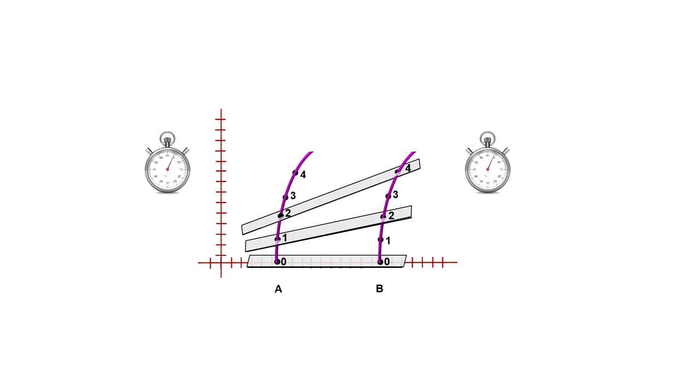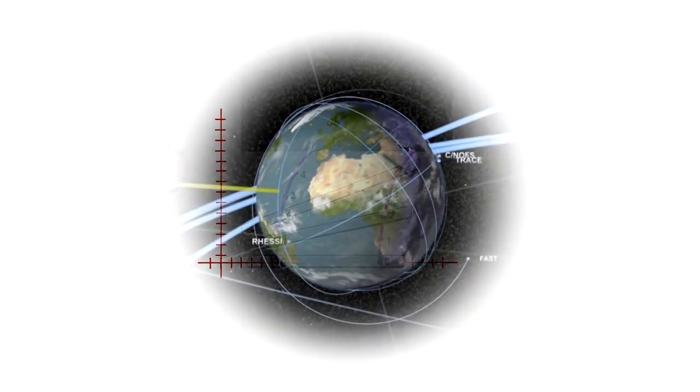The equivalence principle tells us the same thing will happen near a massive body. Gravity slows down time. Newton's gravitation has no such implication.